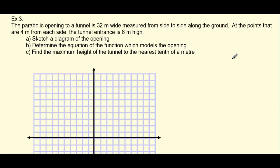We're now going to go through an application problem. And in this problem, we're going to need to determine an equation of a quadratic function. The problem reads like this: A parabolic opening to a tunnel is 32 meters wide, measured from side to side along the ground. At the points that are 4 meters from either end, the tunnel entrance is 6 meters high.